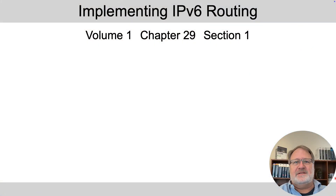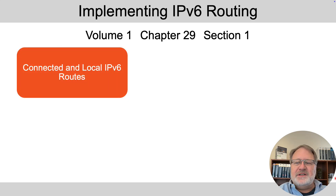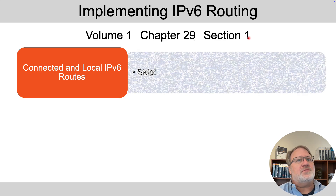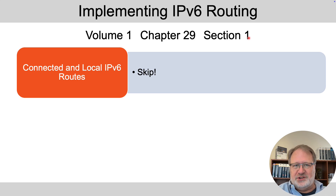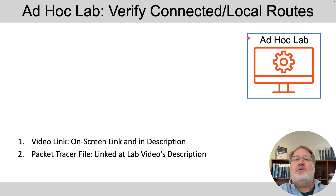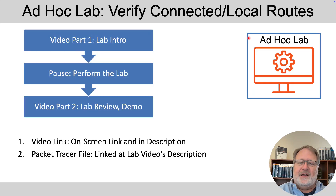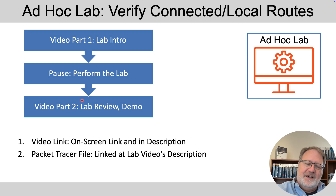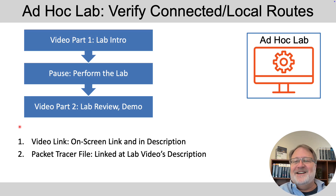That completes this video's topics. The section in the book is Volume 1, Chapter 29, last chapter, Section 1 — it's called Connected and Local Routes. We were pretty comprehensive with that, so you could skip that section and get away with it. It's always helpful to read it, but this would be a place where you could pick up some time. For review and exercise, there's an ad hoc lab video set up — you open it, watch the lab intro, hit pause, go perform the lab in Packet Tracer, and then watch the rest of the video which reviews what you should have done. It would be a review and exercise on Connected and Local Routes.